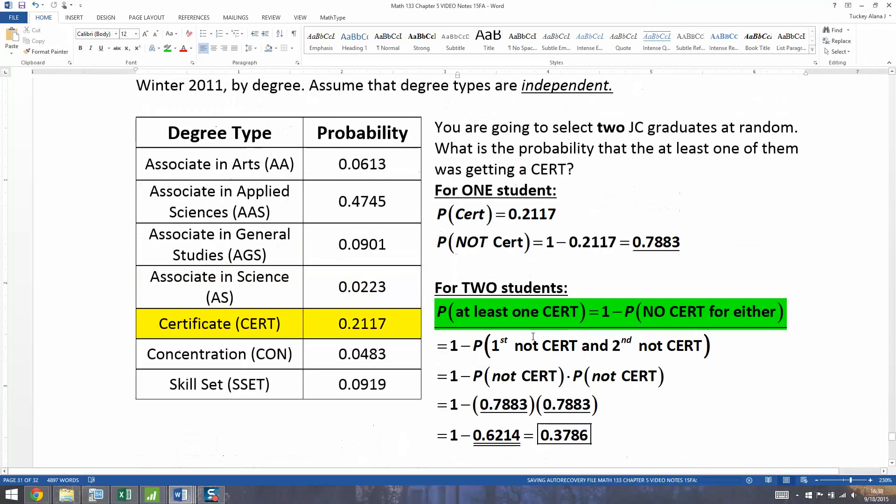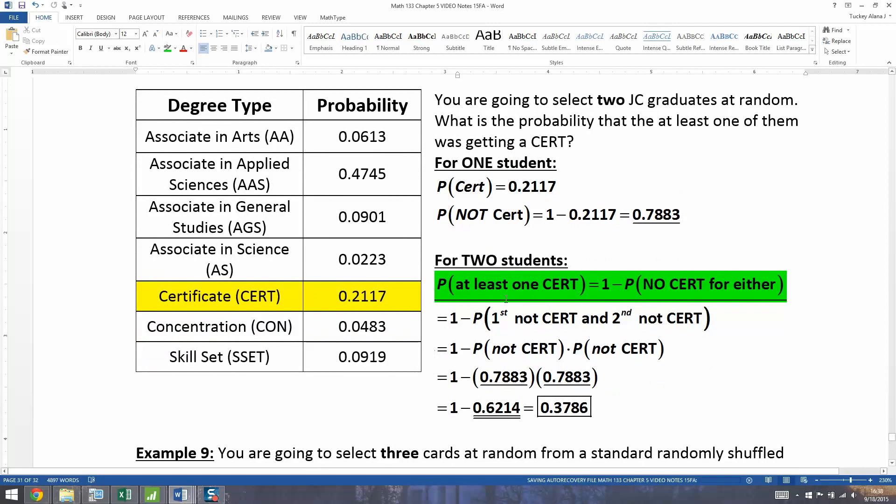And of course, what we're doing here would actually work for four students, seven students. I mean, for four students, you just have 1 minus 0.7883 to the fourth. For seven students, it'd be 1 minus 0.7883 to the seventh. Simple as that.